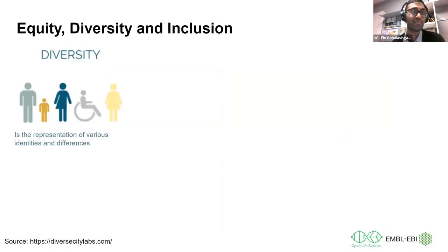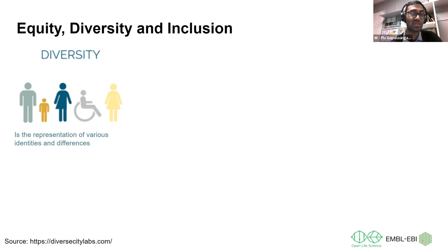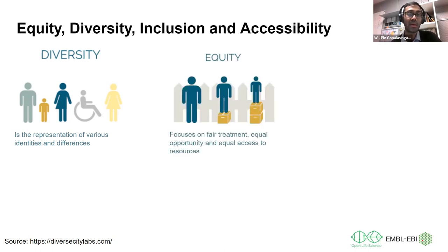Diversity is basically the fair representation of various identities and differences. In the UK, there are at least seven protected characteristics under law: age, disability, gender reassignment, marriage and civil partnership, pregnancy and maternity, race, religion or belief, sex, and sexual orientation. Diversity is about ensuring all these groups are included and visible in discussions.